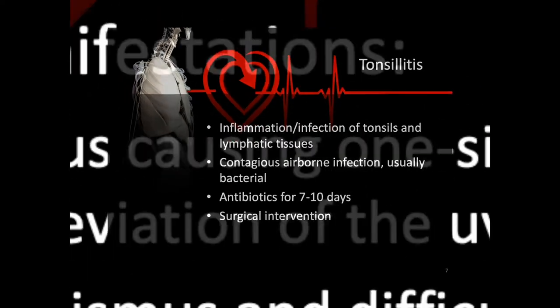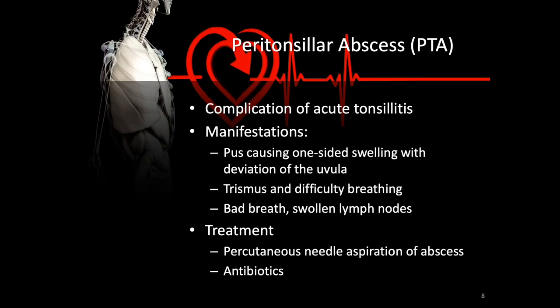Left untreated, acute tonsillitis can cause the complication known as peritonsillar abscesses, or PTA. Manifestations of PTA include pus-causing one-sided swelling with deviation of the uvula, trismus or lockjaw, difficulty breathing, bad breath, and swollen lymph nodes. The treatment is needle aspiration of that abscess and broad-spectrum antibiotics.